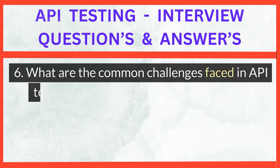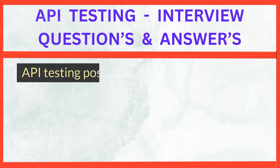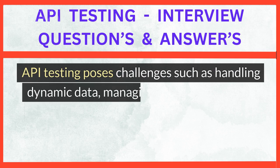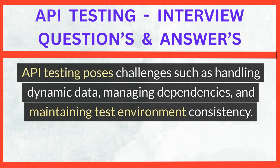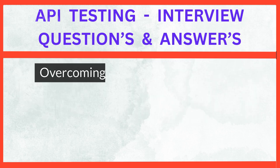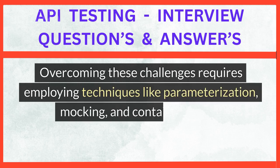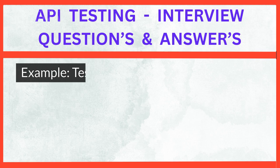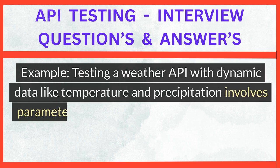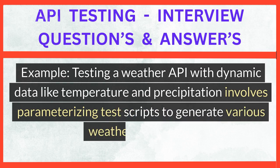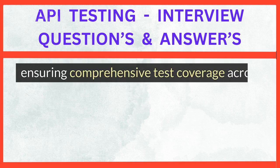What are the common challenges faced in API testing, and how do you overcome them? API testing poses challenges such as handling dynamic data, managing dependencies, and maintaining test environment consistency. Overcoming these challenges requires employing techniques like parameterization, mocking, and containerization. For example, testing a weather API with dynamic data like temperature and precipitation involves parameterizing test scripts to generate various weather conditions, ensuring comprehensive test coverage across different scenarios.